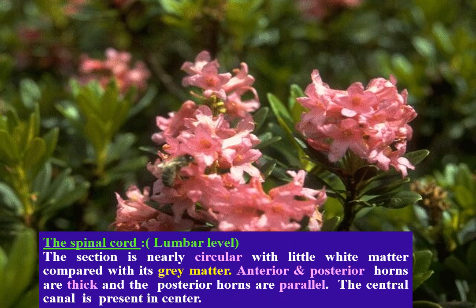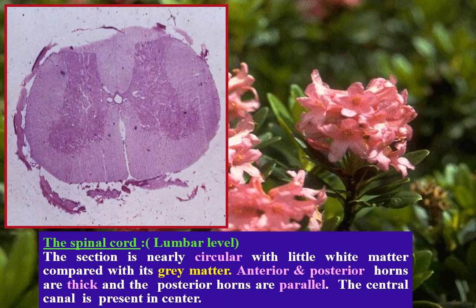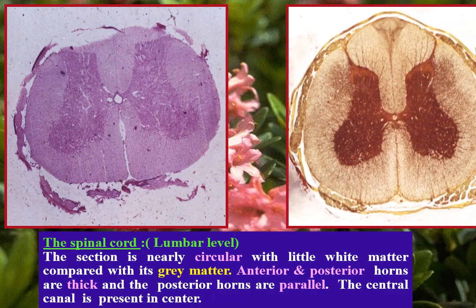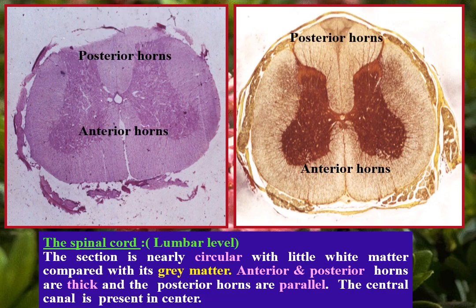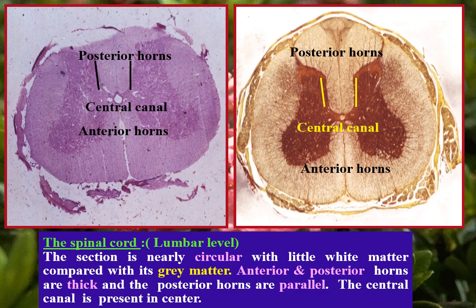Spinal cord, lumbar level — by hematoxylin and eosin and silver. The section is nearly circular with very little white matter compared to its gray matter. Both anterior and posterior horns are thick, and the posterior horns are nearly broad. The central canal is present in the center of the section.